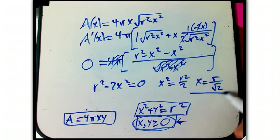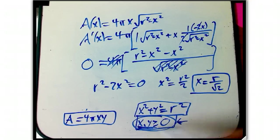Or X is R over root 2, I don't need a plus or minus, because X is a length. I'm already interested only in X greater than or equal to zero. Okay, so that's the critical point.